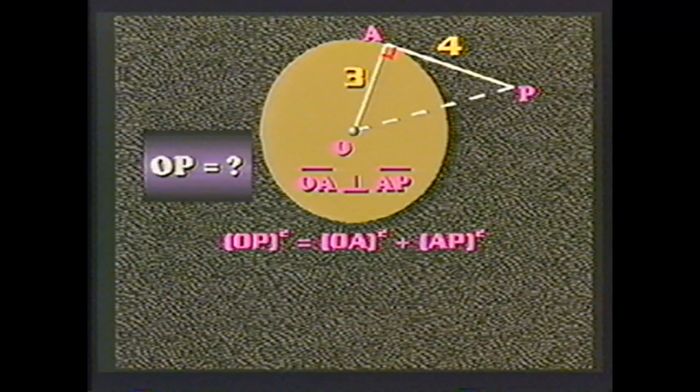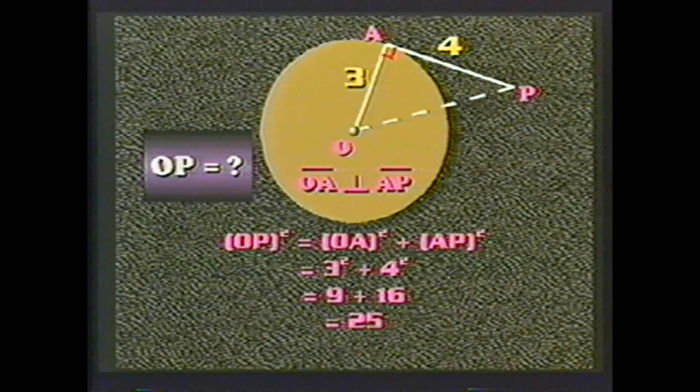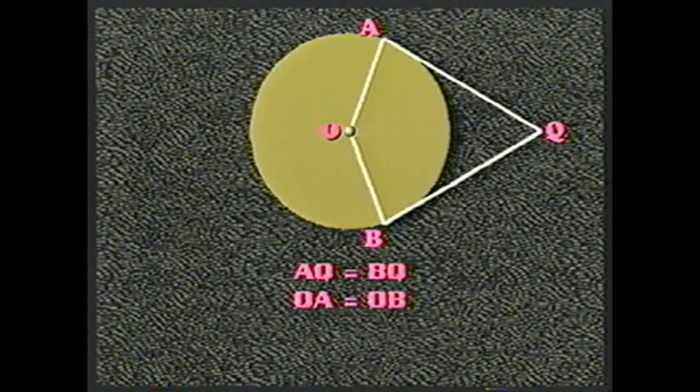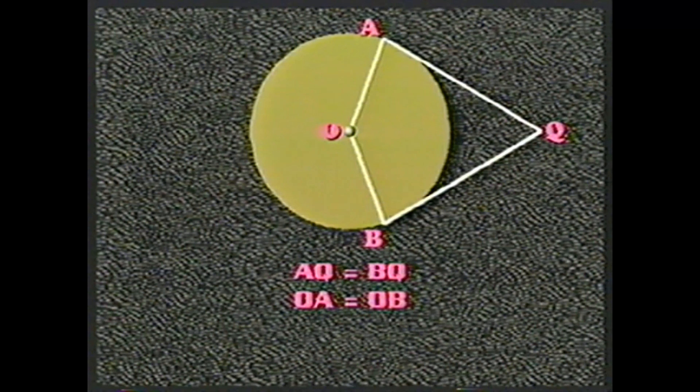Here's a problem: In this figure, OA is a radius of a circle with length 3. A tangent is drawn from A to point P, and the length of AP is 4. What is the length of segment OP? The theorem states that radius OA is perpendicular to tangent AP, so triangle OAP is a right triangle. We can use the Pythagorean theorem: OP² = OA² + AP² = 3² + 4² = 9 + 16 = 25. So OP equals the square root of 25, which is 5.